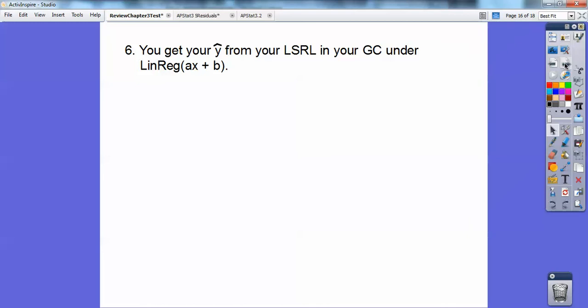You get your y hat from your least square regression line in your graphing calculator. It's under stats, then scroll over to calculate, and I think it's number four, linear regression. And if you did it in list one, then you do list one, comma, list two, and you probably do comma, y sub one. And y sub one is in vars, then scroll over to y vars, then it's under function, so you go enter, enter, and your y sub one will appear.